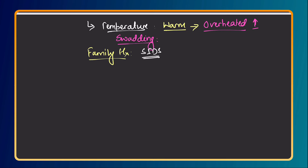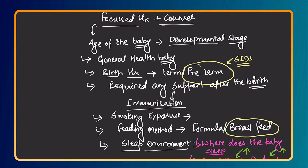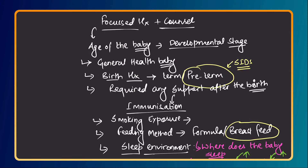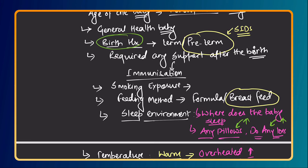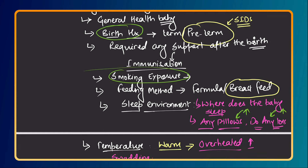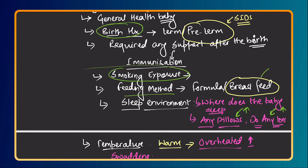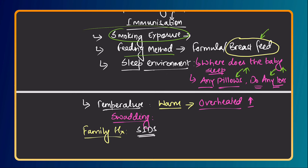To summarize the history taking: ask about maturity of the baby because preterm babies are more likely to have SIDS; ask about smoking exposure because smoking increases the risk; ask about feeding method because breastfeeding protects against SIDS; ask about sleep environment because co-sleeping increases risk while sleeping separately reduces it; pillows or toys in the cot increase the risk; and overheated rooms also increase the risk of SIDS.